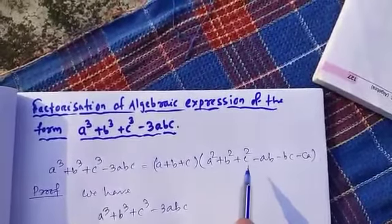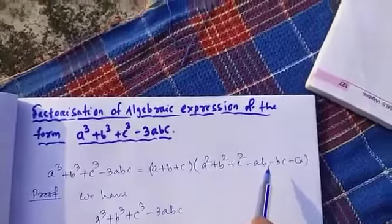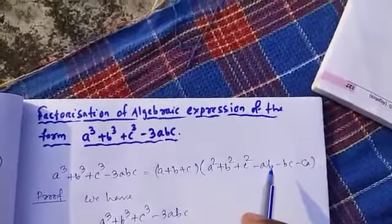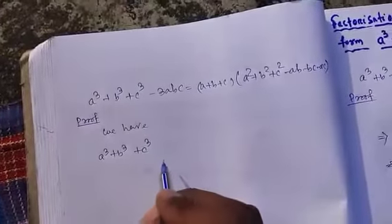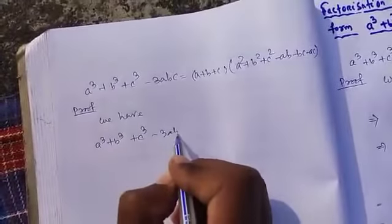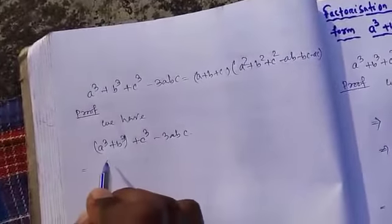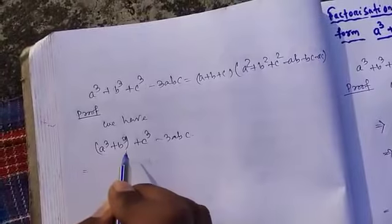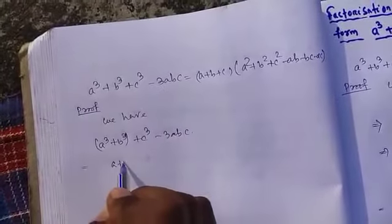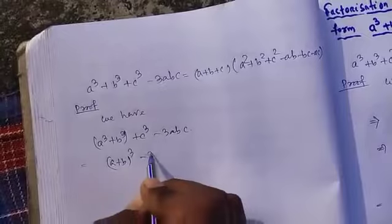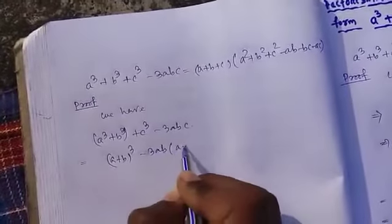Let's prove it. We have a³ + b³ + c³ - 3abc. We know the formula for a³ + b³, which is (a + b)³ - 3ab(a + b).